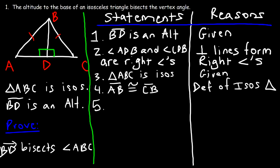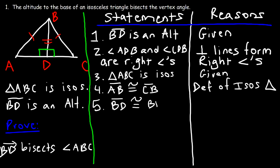What else do we need to prove the two triangles congruent? We have the right angles and we've shown that the hypotenuse is congruent. Now we need to show that one of the legs of the two right triangles are congruent. Notice that we have a common side BD, so BD is congruent to BD based on the reflexive property.